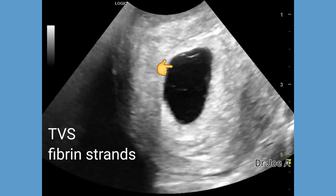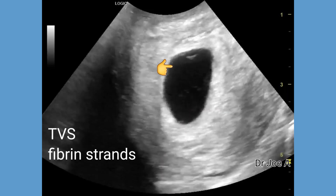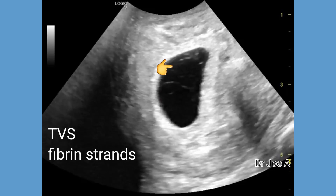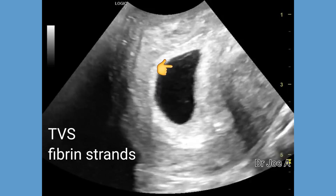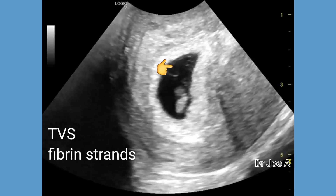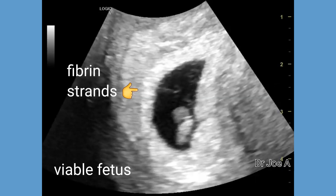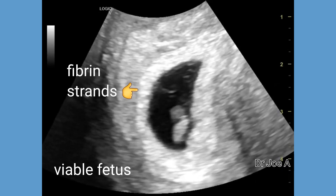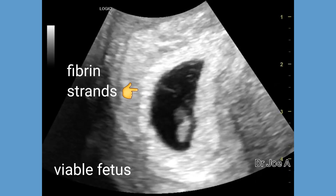The question that arose was: are these early amniotic bands or something else which may not be significant? Amniotic bands are usually not seen at such an early stage of pregnancy, and hence we think that this may be something called fibrin strands — a benign condition.